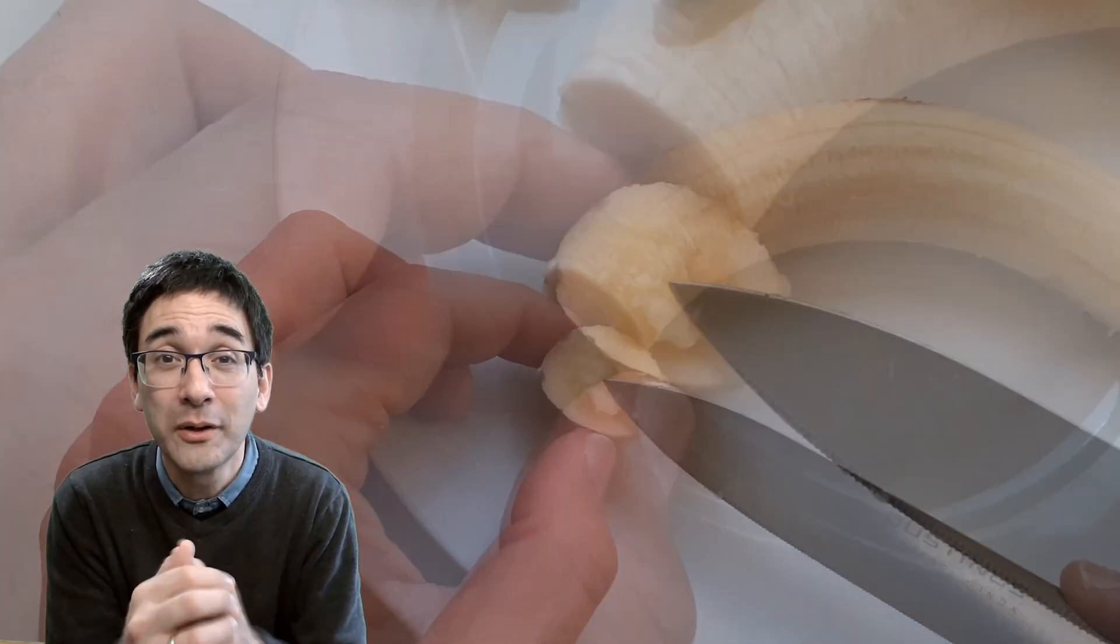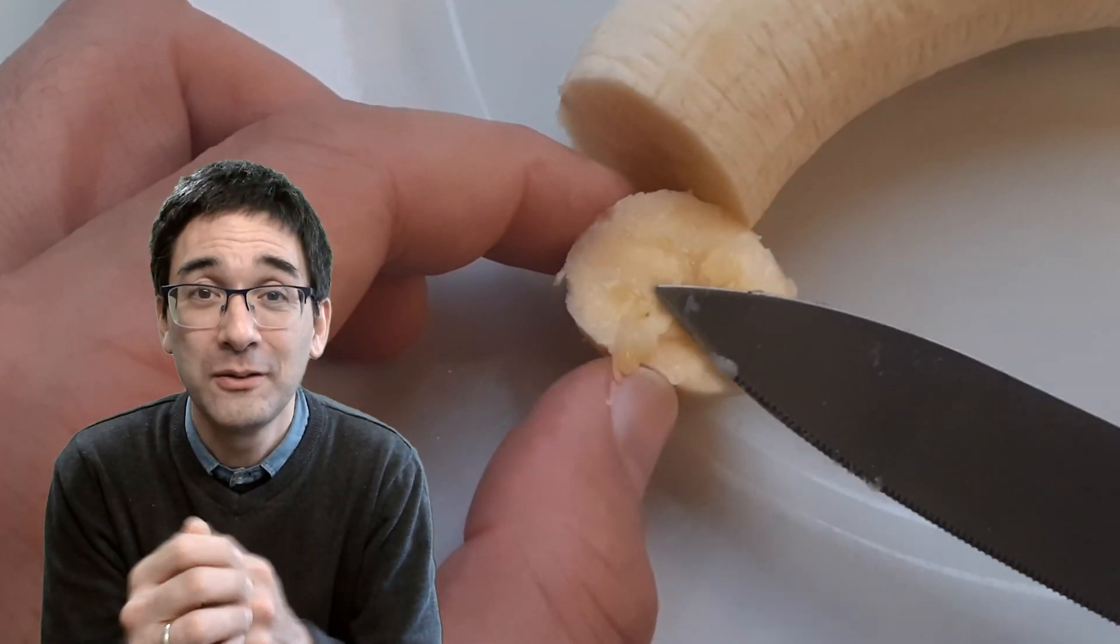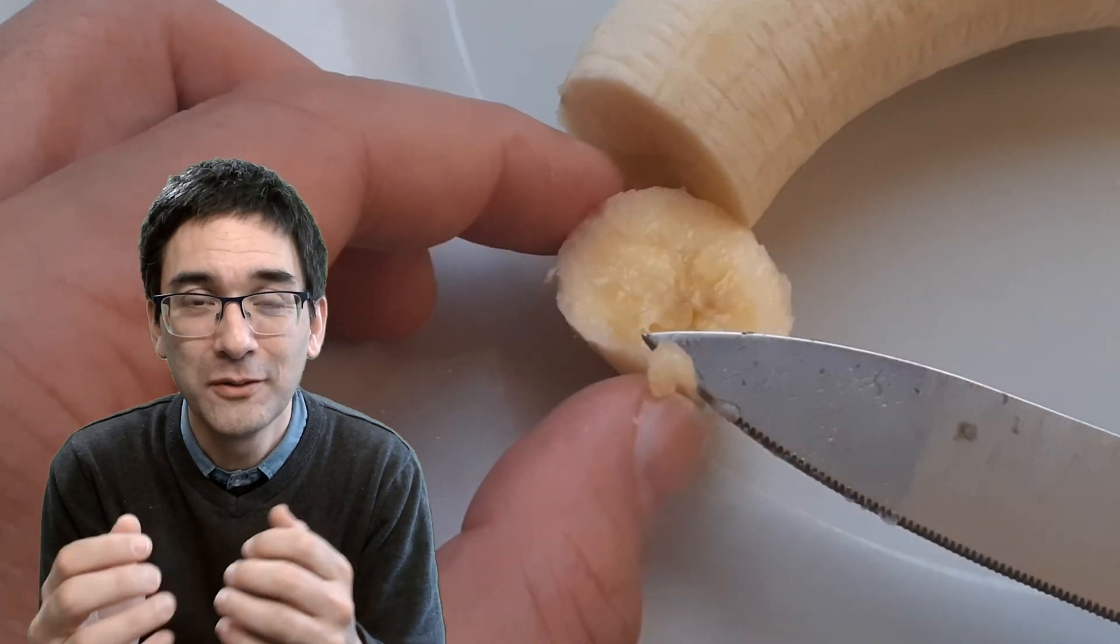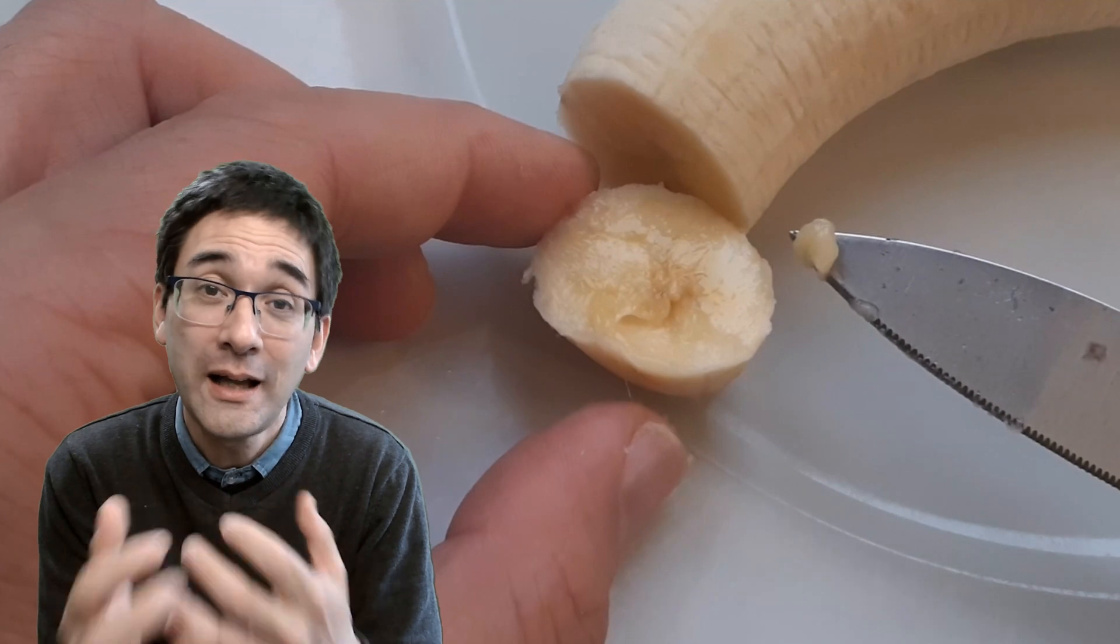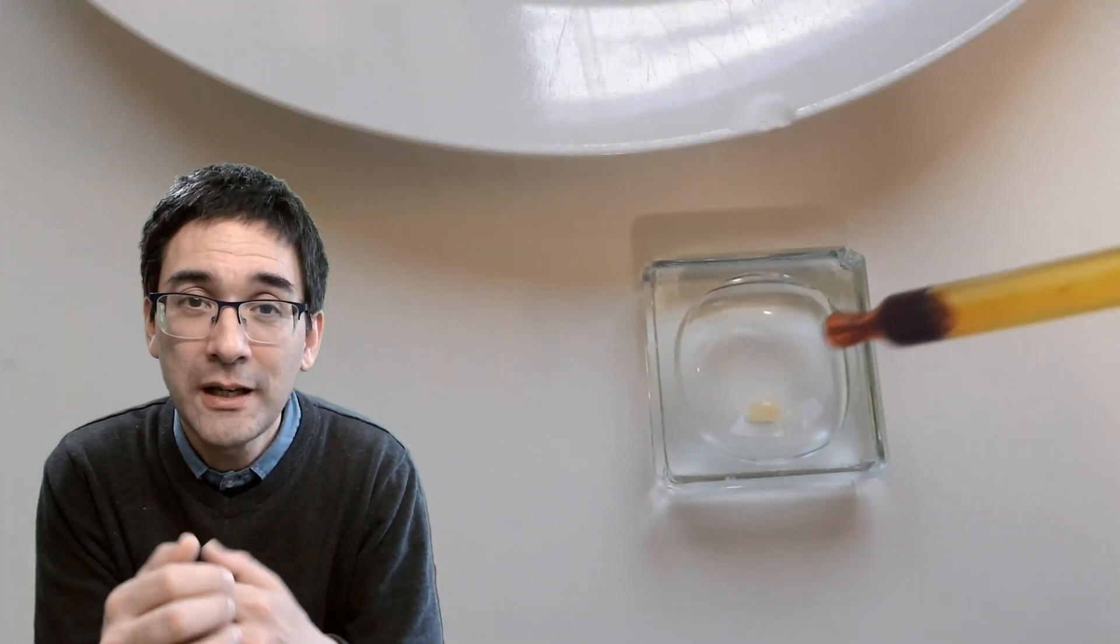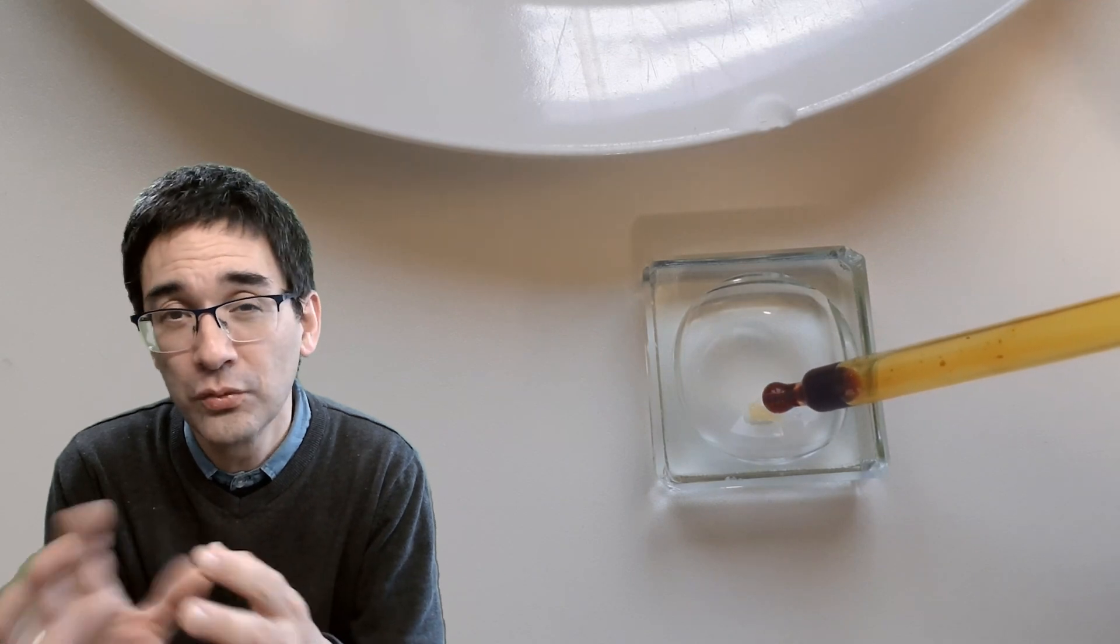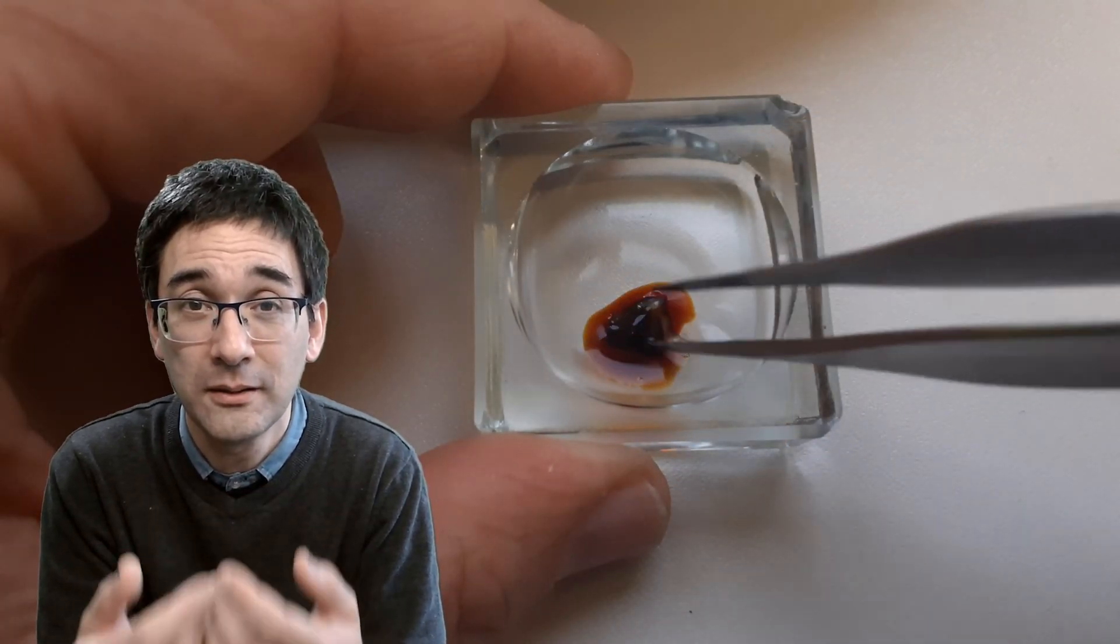So using a knife tip, I've taken a little bit of the banana material and then I mixed it with iodine. Now iodine and starch, they react with each other. The iodine is originally yellowish brownish in color, orange in color, and when it reacts with starch it turns really black.